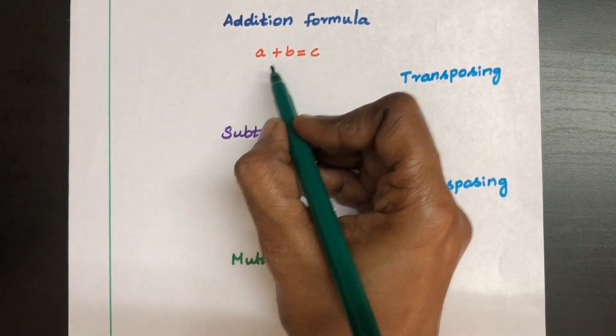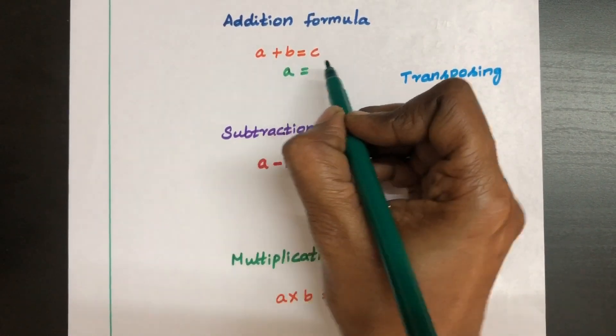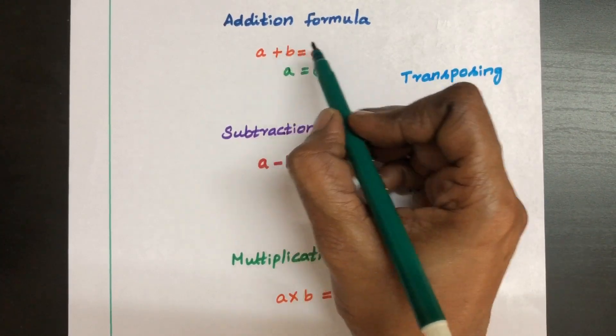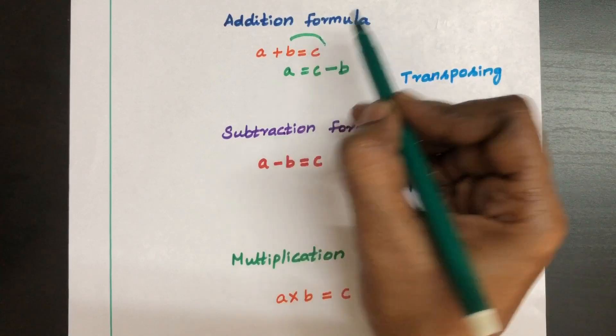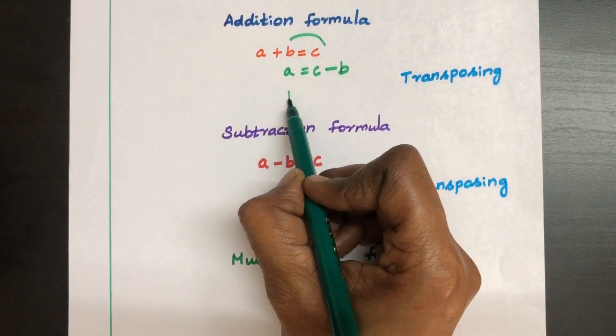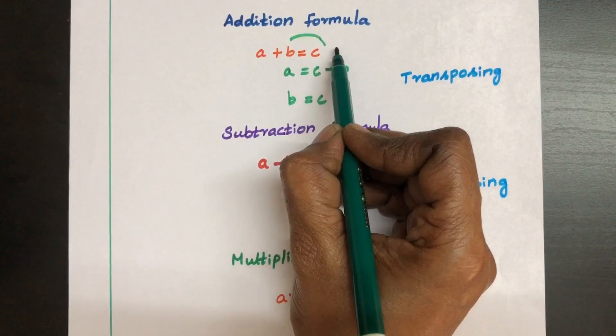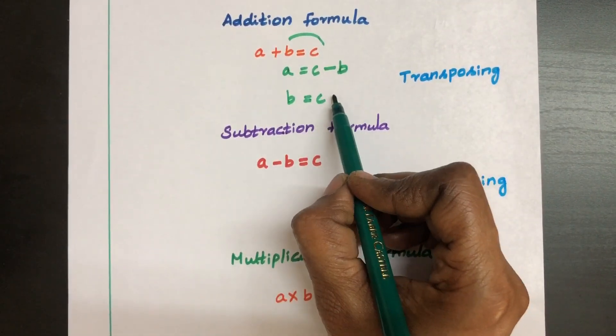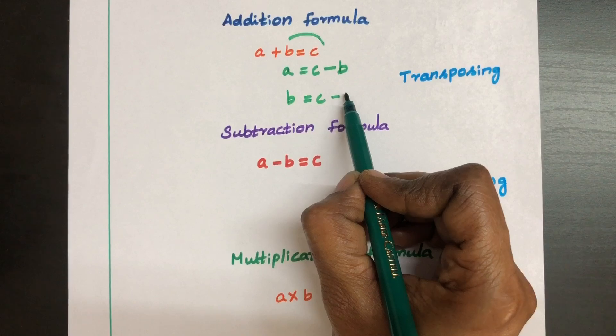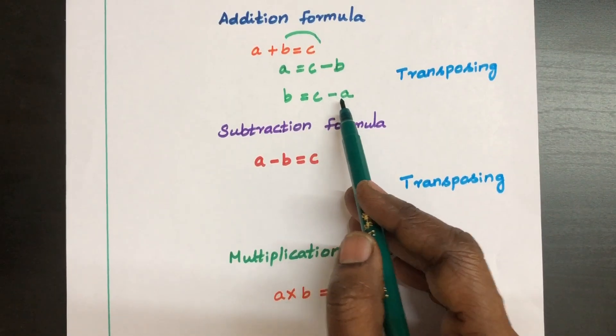Now addition formula. If you want to know A, have A left side and C transposition will happen here, C minus B. That means this B will come here minus B. If you want B, transpose A here, keep B as it is and transpose A here. So C minus A. By this formula you can easily solve the equation.